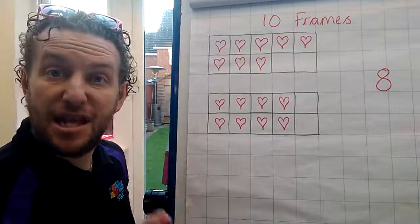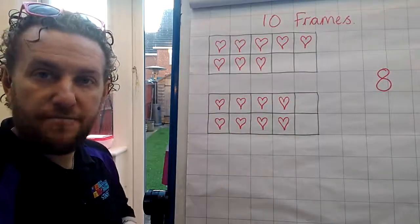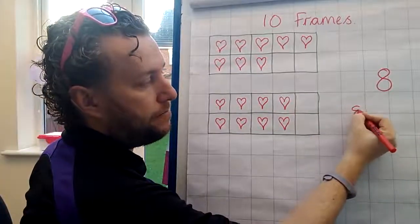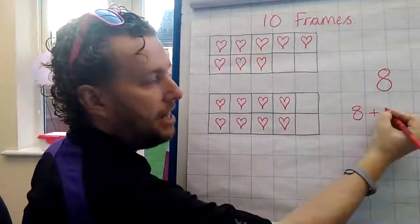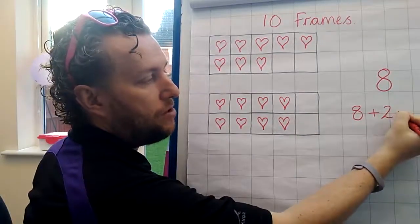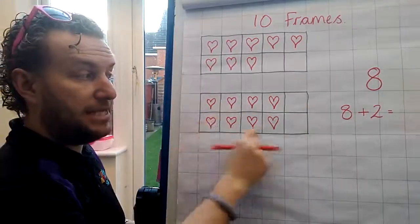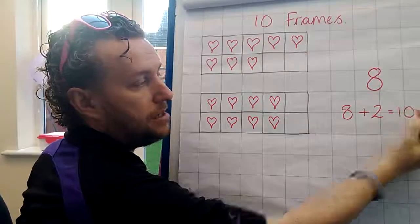Now, the next challenge is, can you also use this to write out a number sentence? For example, we have eight hearts, and we have two empty boxes. Eight and two equals, how many all together? It must be ten, mustn't it? Because it's in our ten thing.